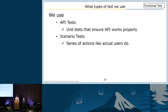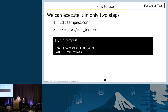Tempest supports four types of tests: API, scenario, third-party, and stress test. We use API and scenario tests. API test is a unit test to ensure the API works properly. Scenario tests have a series of APIs to simulate actual users' actions. It's easy to use Tempest — we can execute it in only two steps: first, edit the Tempest configuration file, for example registering credentials and enabling or disabling features; then execute run Tempest. That's all.